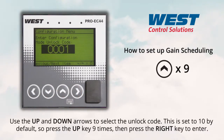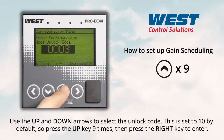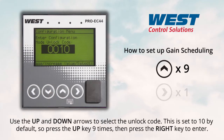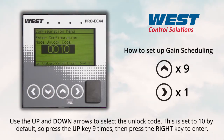Use the up and down arrows to select the unlock code. This is set to ten by default, so we'll press the up key nine times, then press the right key to enter.